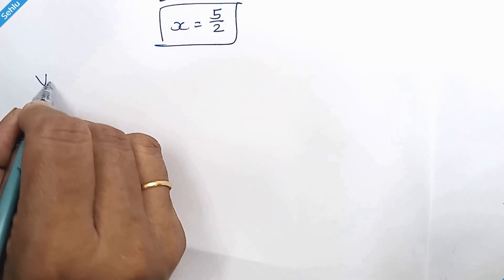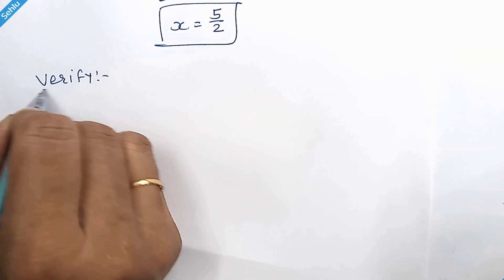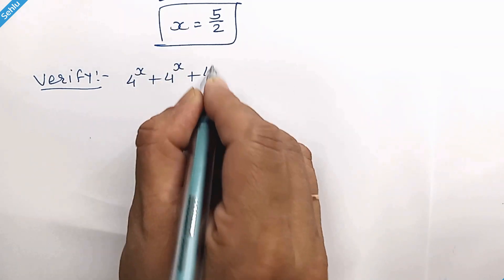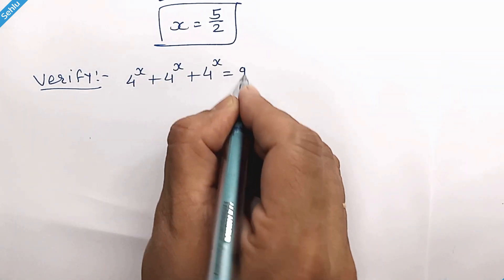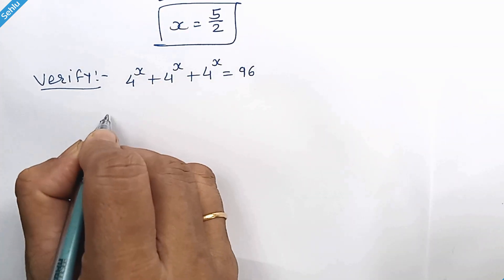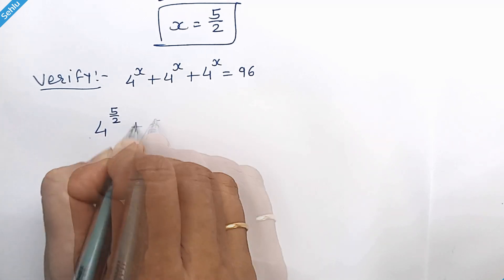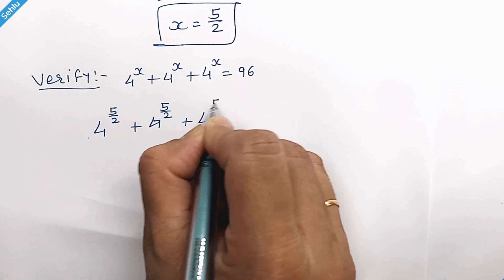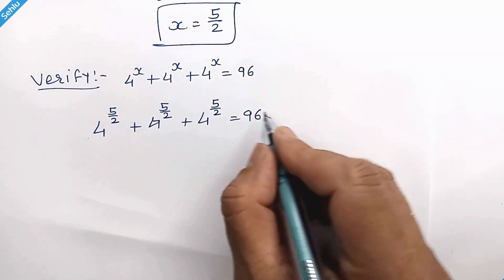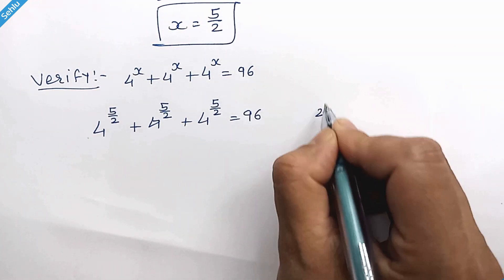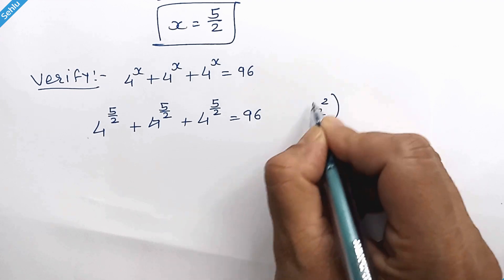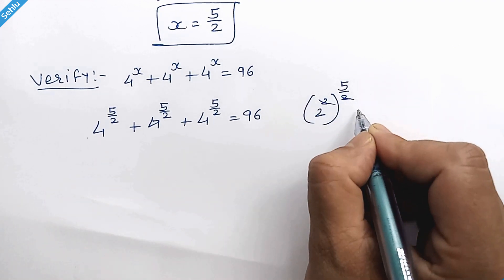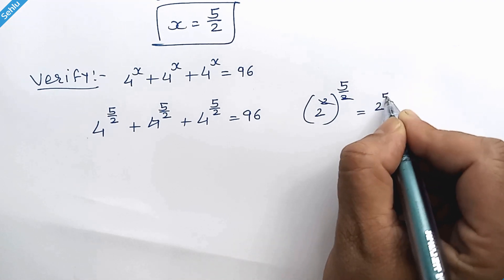Now let's verify this answer quickly. We substitute x = 5/2 into the original expression. Since 4 is 2 squared, we can rewrite 4 to the power 5/2 as 2 squared to the power 5/2. The 2 can multiply, so we have 2 to the power 5.